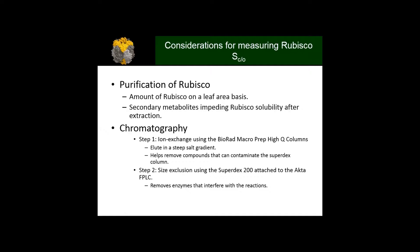Let's get into the assay. Preliminary considerations include the purification of Rubisco. It's important to be aware of how much Rubisco you have in your leaves, which determines how much leaf material you need to purify Rubisco at a substantial concentration. It also depends on your understanding of secondary metabolites that impede Rubisco solubility after extraction, particularly important in species like eucalyptus trees with high phenolic compounds.